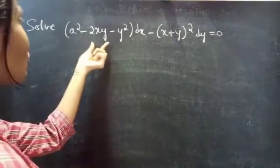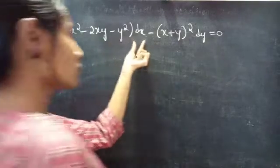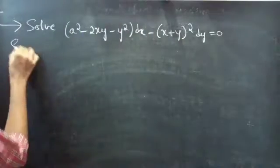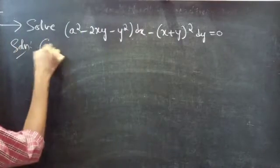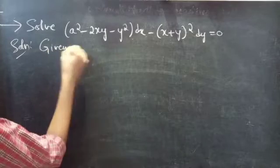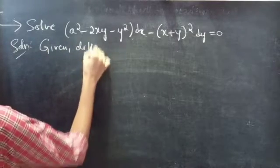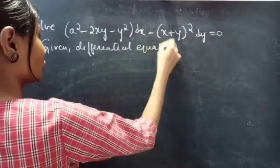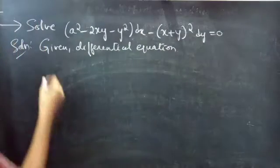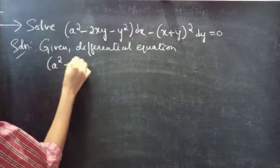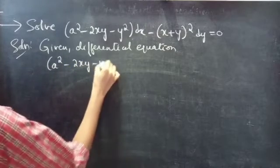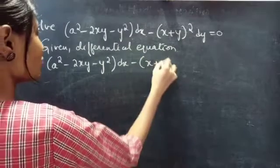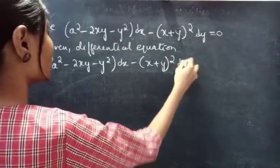Solve: x square minus 2xy minus y square into dx minus x plus y whole square into dy equals to 0. Solution — given differential equation: x square minus 2xy minus y square into dx minus x plus y whole square into dy equals to 0.